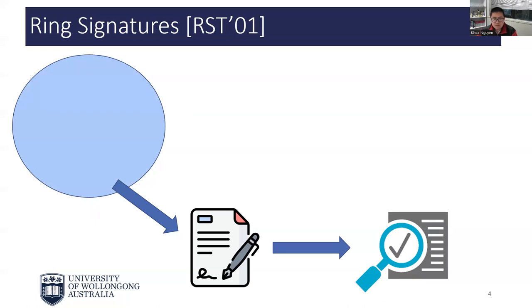Absolute anonymity could be a nice feature that protects users in certain situations, such as whistleblowing. However, it can also be used for unethical or illegal purposes. Therefore, it would be desirable to restrict the excessive anonymity of users in ring signatures. There have been several attempts, such as linkable ring signatures or traceable ring signatures. However, the linking and tracing mechanisms in these systems can only be activated if the signer in question has generated at least two signatures. If a malicious signer only issued one controversial signature and then went offline forever, then it can avoid accountability.